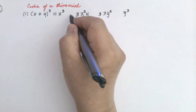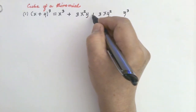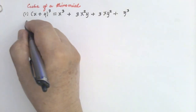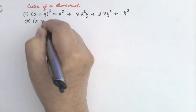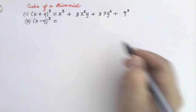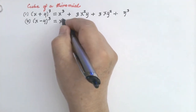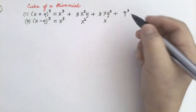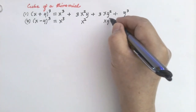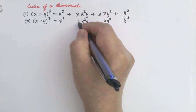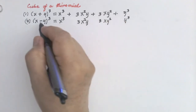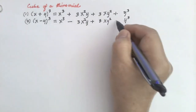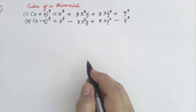If this is plus, all signs are positive: plus, plus, plus. This will serve as our first pattern. Our second pattern is x minus y cube. Again write x cube, x square, x, then y cube, y square, y, with coefficients 3 and 3. If this is minus, the signs alternate: positive, negative, positive, negative. That will serve as our second pattern.